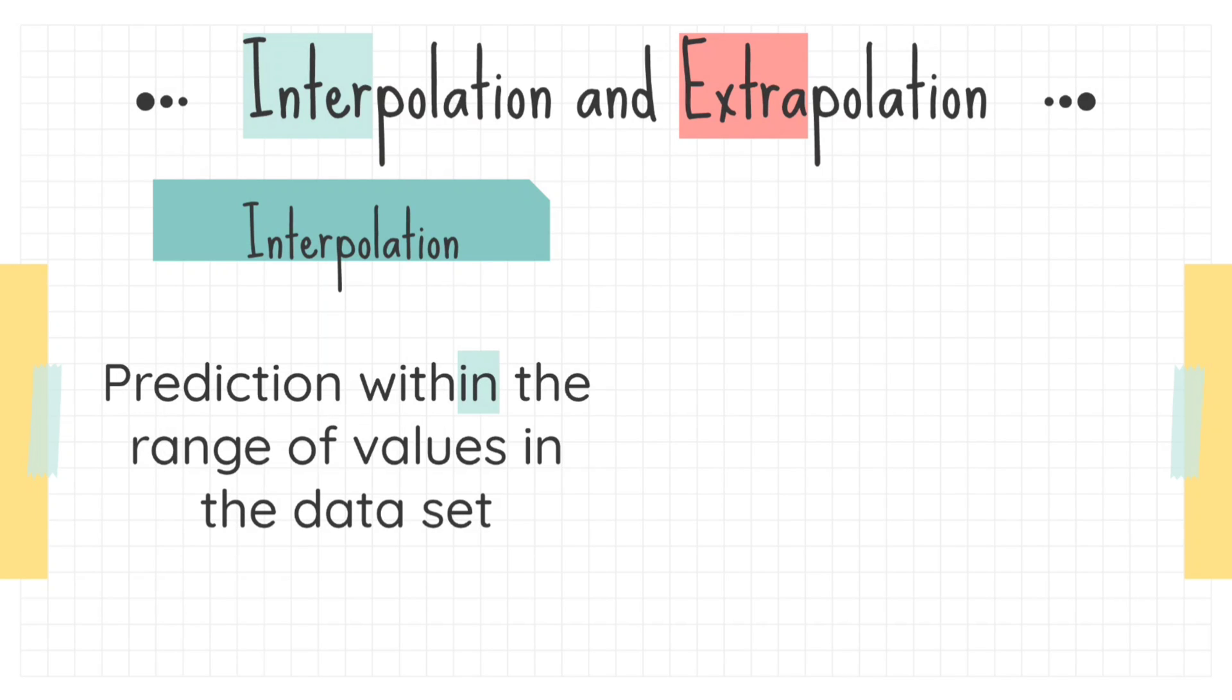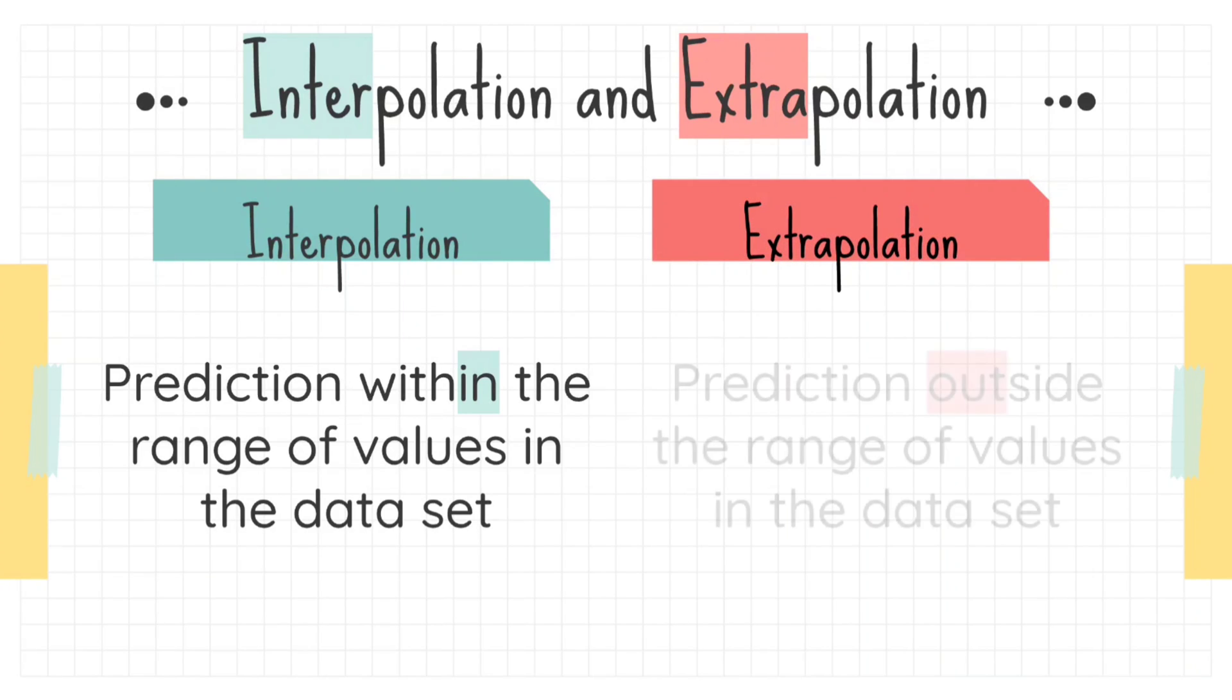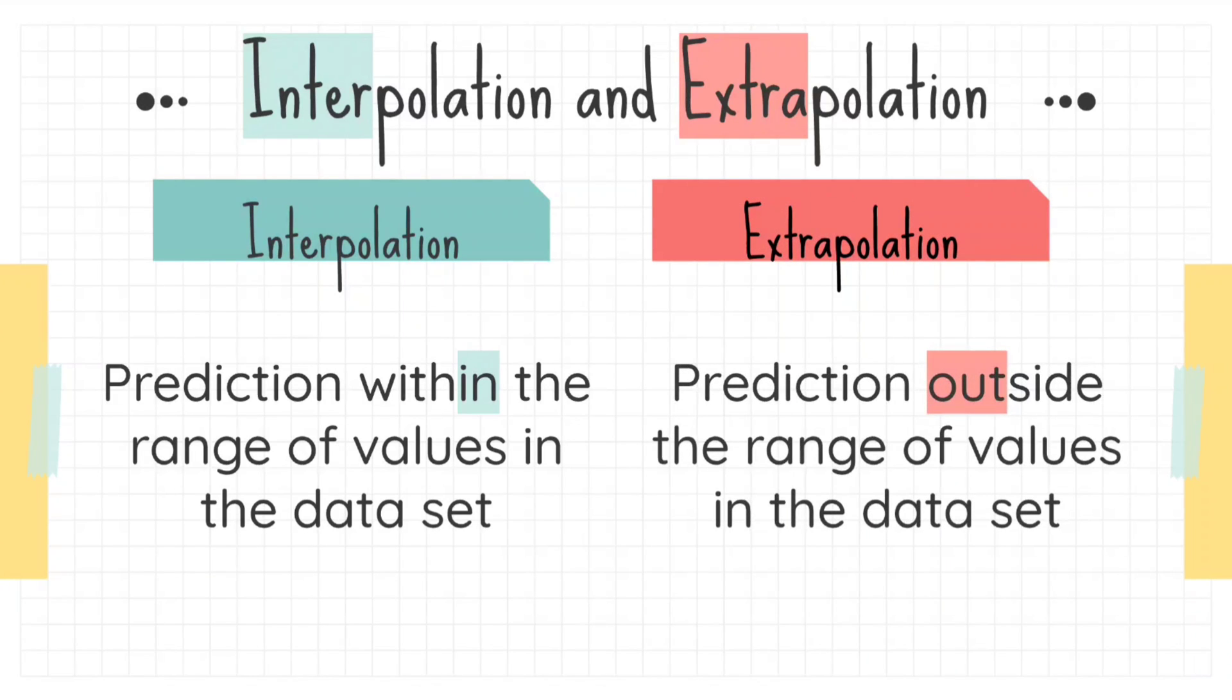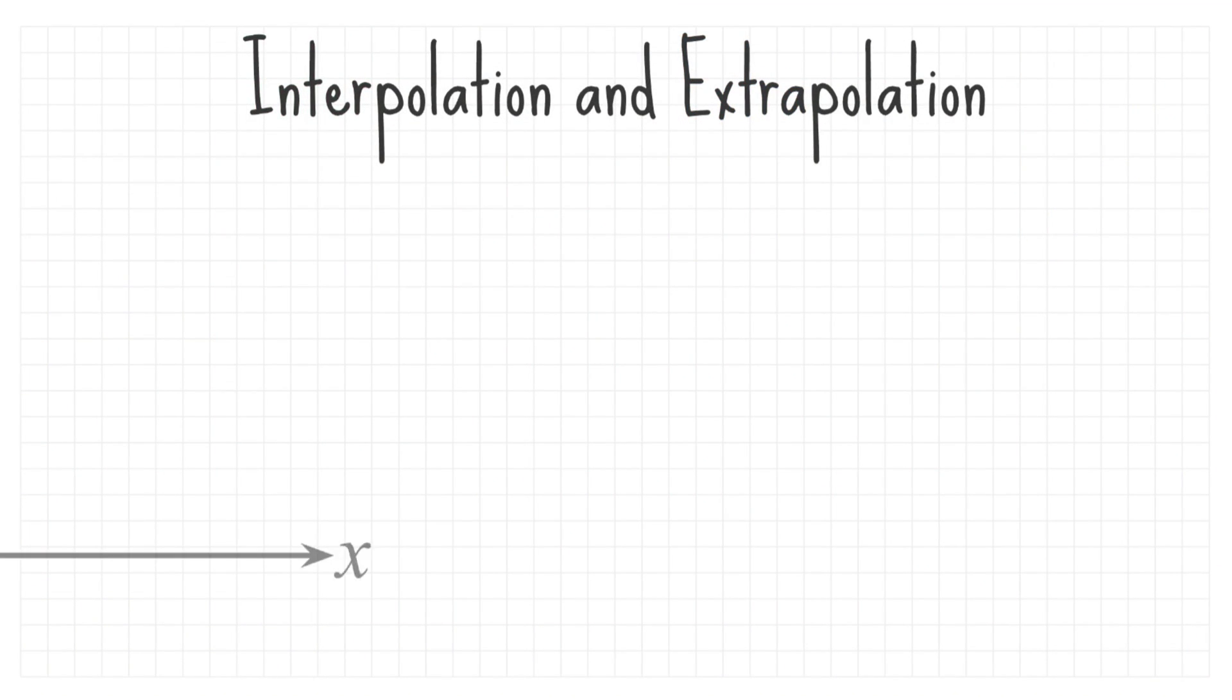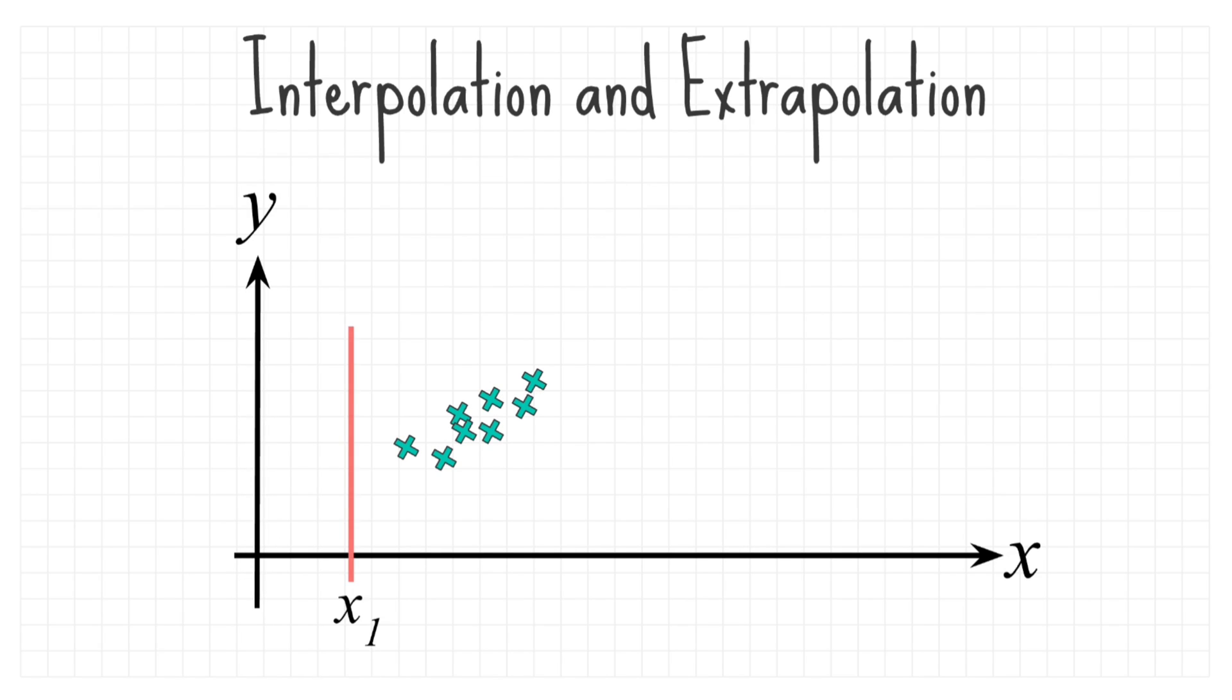Interpolation is prediction within the range of values in the data set. Meanwhile, extrapolation is prediction outside the range of values in the data set. Let's see this graphically. We have some data set plotted in a scatter diagram inside the range of values from x1 to x5. Our prediction here should be fairly accurate. On the outside of the range, the prediction here is inaccurate because we have no data to support this.